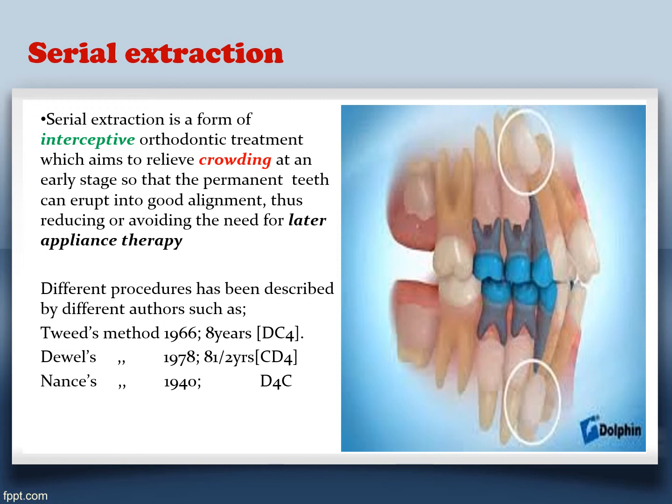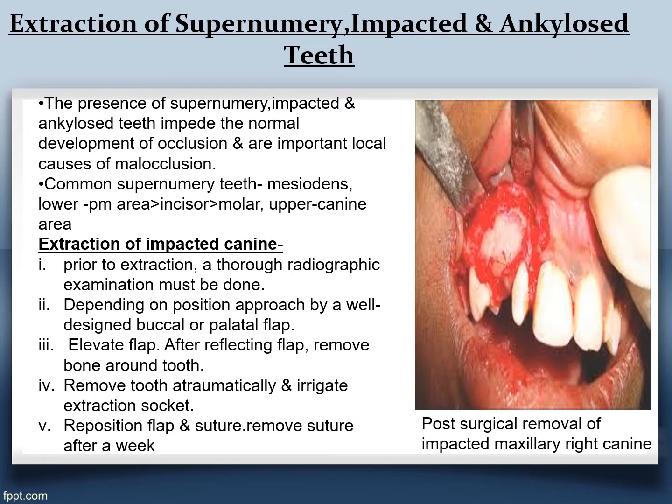In Tweed's method: DC4 — deciduous canines, deciduous molars, then first premolars. Dewel's method is CD4 — canines first, then molars, then first permanent premolars. Nance method is D4C. This is very important — it can be your short answer, MCQ, or MEQ question.